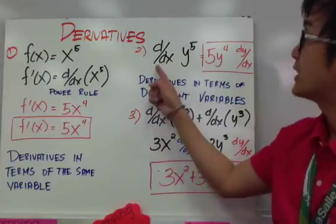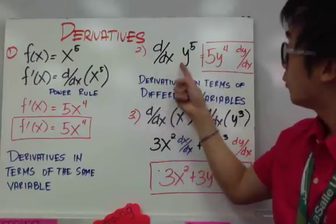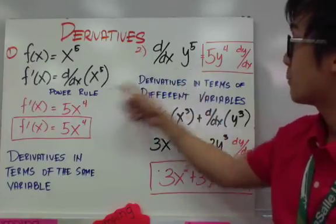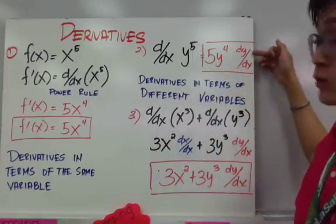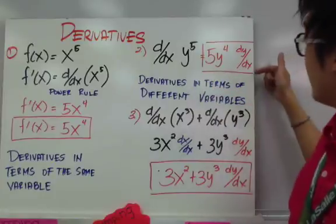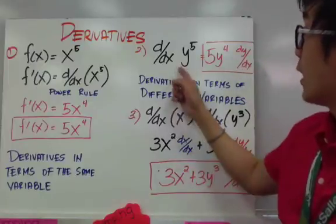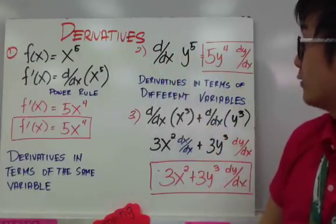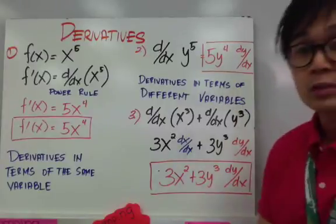For number two, we are tasked to find the derivative of y to the fifth in terms of x. We still treat this as a regular function. To derive y to the fifth using power rule, it is simply 5y to the fourth. But this time, my notation is now dy over dx. The difference from number one is that I am not going to erase dy over dx — it will stay as the derivative of y to the fifth in terms of x. This is what we call derivatives in terms of different variables, and you will see this notation throughout the problems today.